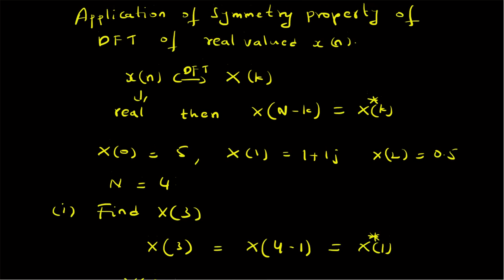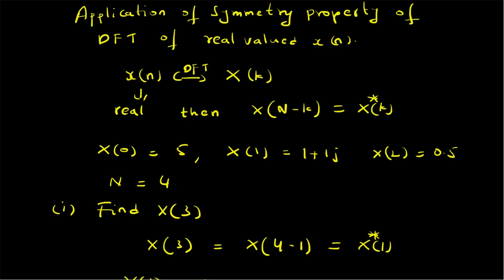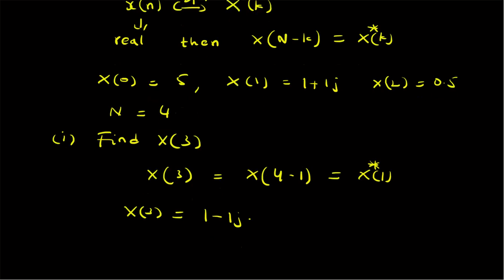To summarize, we have looked at an example where we apply the symmetry property of the DFT of a real valued signal x of n. For a real valued x of n with DFT X of k, the symmetry property states that X of N minus k is equal to the conjugate of X of k. Because of this symmetry, we can find unknown values — for example, given the first three values of a 4-point DFT sequence: X of 0 equal to 5, X of 1 equal to 1 plus j, and X of 2 equal to 0.5, X of 3 equals X of 4 minus 1, which is the conjugate of X of 1, giving X of 3 equal to 1 minus j.